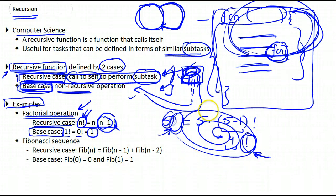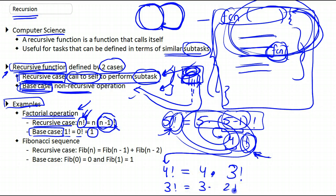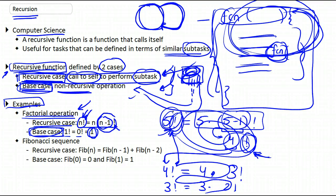Starting from 5, you reduce it to sub-problems while keeping this in memory. So 4 factorial comes to 4 times 3 factorial; 3 factorial is 3 times 2 factorial, and so on until you reach the base case. Once you get your solution, you work your way back up to where you came from in order to get the solution to 5 factorial. This is how recursion works out in the factorial operation case.